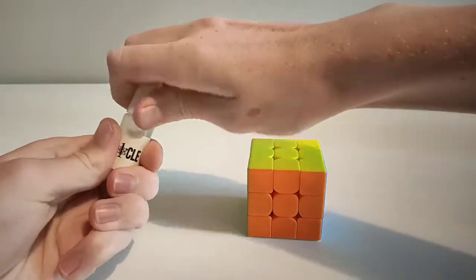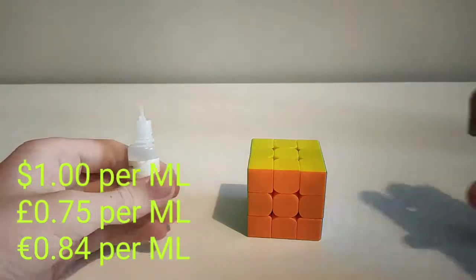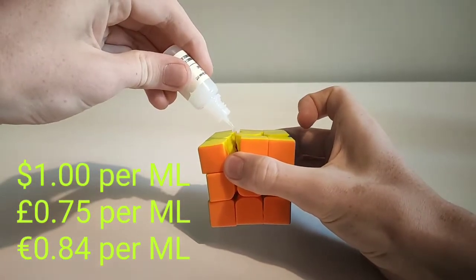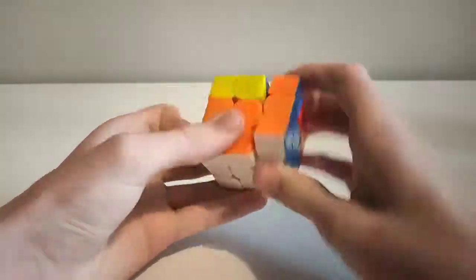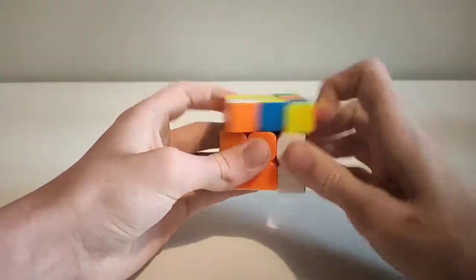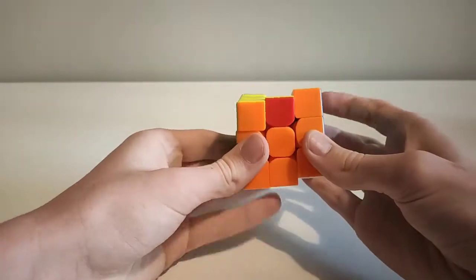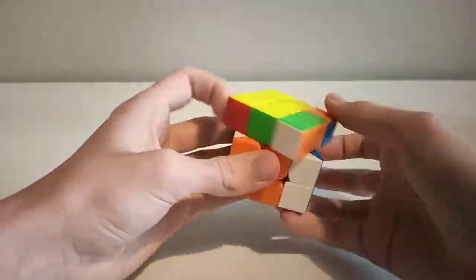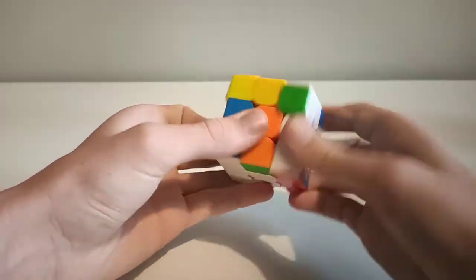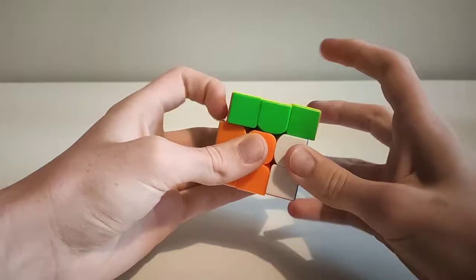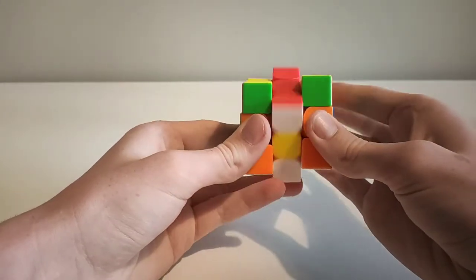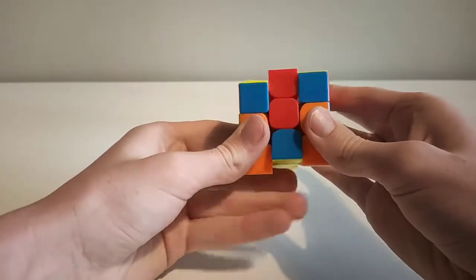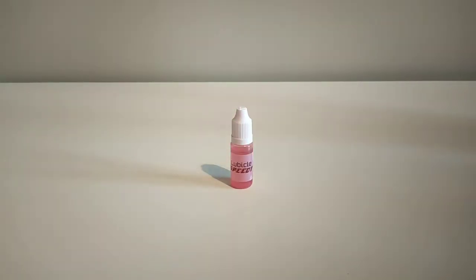Next up we have lubical one. Lubical one does two things. First, it makes the cube a good amount faster, nearly as fast as the water-based lubes. Secondly, part of it binds to cracks or imperfections in the pieces, so it can make a cube less scratchy and smoother in the long run.